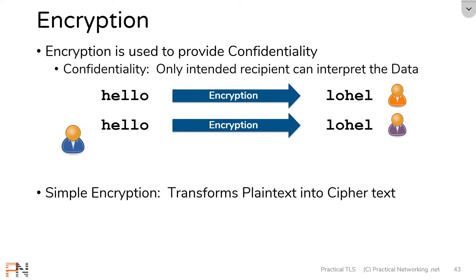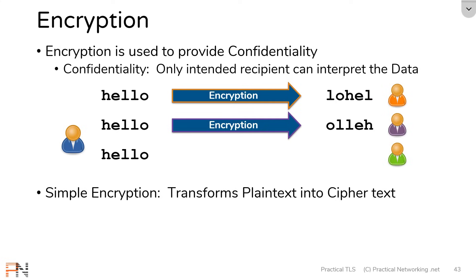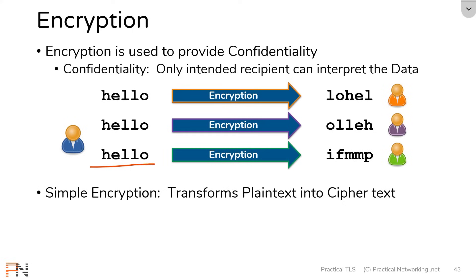Instead, for every user the blue user wants to speak to, he's going to have to develop a new transformation. This way, the users he is speaking to don't have insight into what was sent on the wire. If the blue user wants to speak to yet another person, he's going to have to create yet another algorithm to securely transform the word he's trying to send. So as you can see, simple encryption doesn't scale. Every user I have to speak to requires a new way of transforming text into something indecipherable.